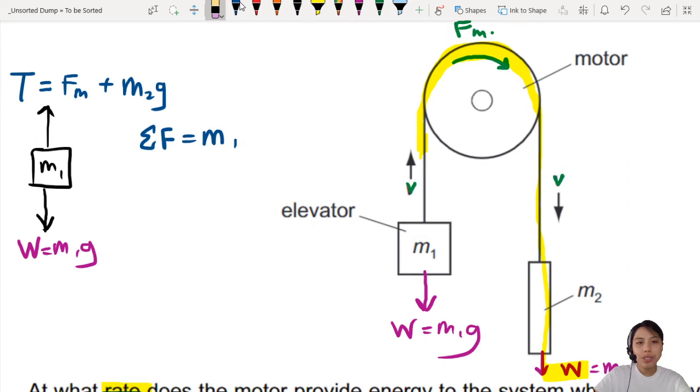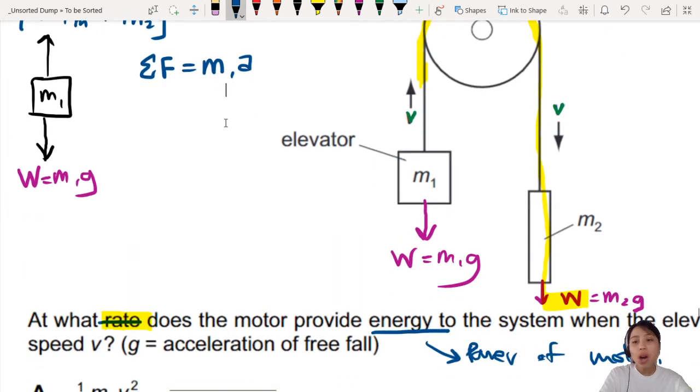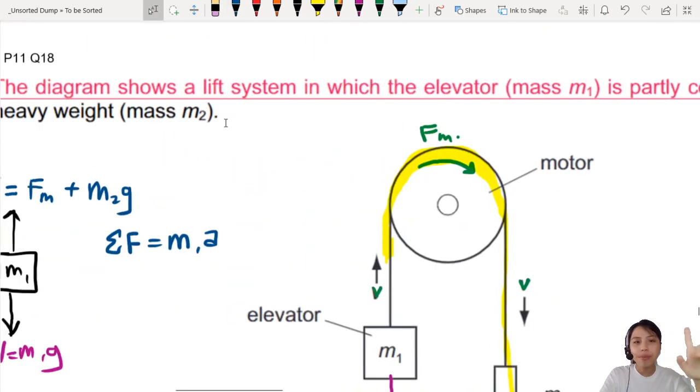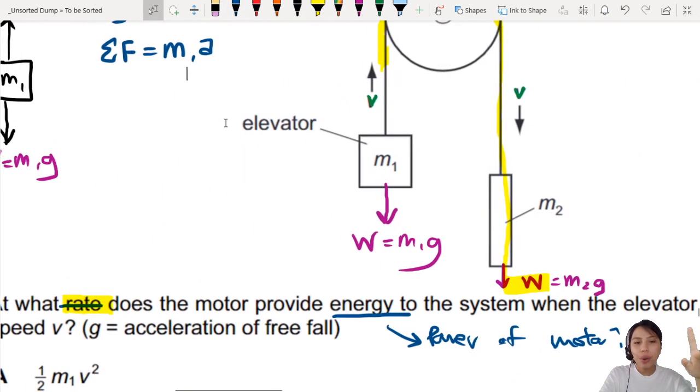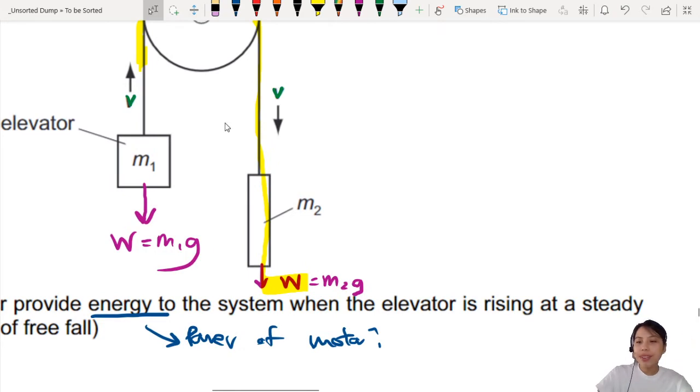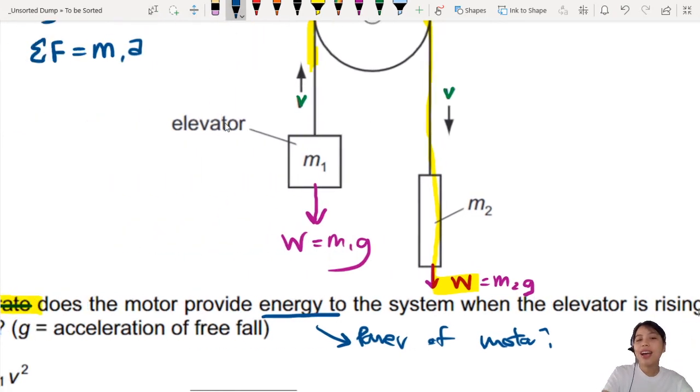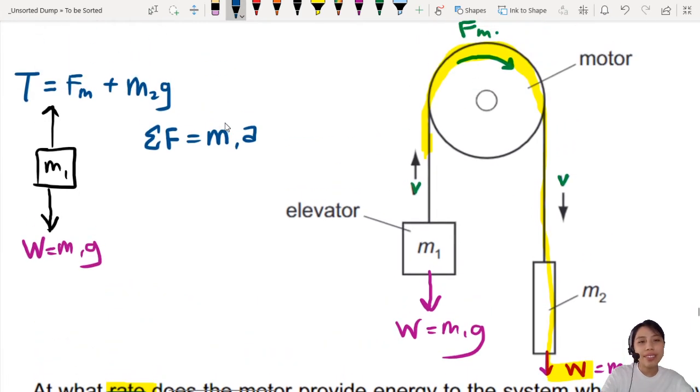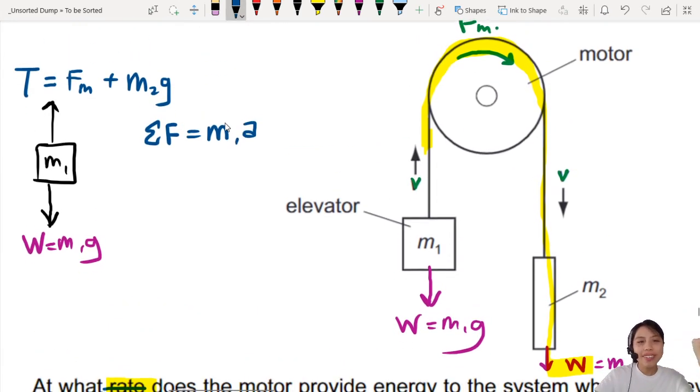I see a mistake. This is not M1G. This is MA. We don't know the acceleration, do we? Wait. We do. Lift is going up when the elevator is rising at a steady speed. What does that mean? It means the acceleration is zero. So acceleration zero makes things so much easier. This is just zero. You are not speeding up. You're not slowing down. You're just zero.